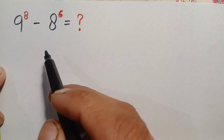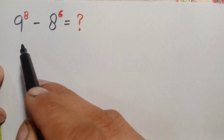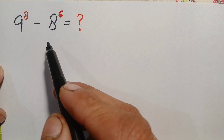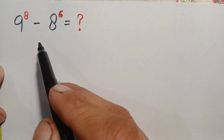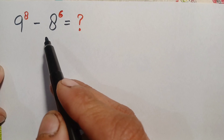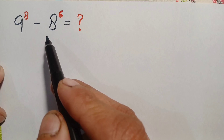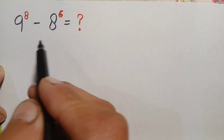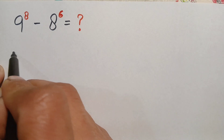Hello everyone, you are welcome. How to solve this beautiful exponential math problem without any calculator and without any rough work. First of all, we will change these two bases to their exponential form having the least base — a prime number in the base. So therefore we can write these two bases in exponential form.